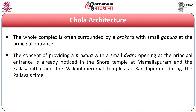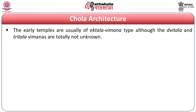The concept of providing a Prahara with a small entrance opening at the principal entrance is already noticed in the Shore temple at Mamallapuram and the Kailasanatha temple at Kanchipuram, and even at the Vaikuntaperumal temple at Kanchipuram. The introduction of this Gopura by the Pallavas was further enlarged by the Cholas. The early temples are usually of Ekatala Vimana type, although Dvitala and Tritala — two-storey and three-storey Vimanas — are also not unknown.